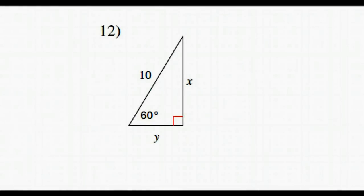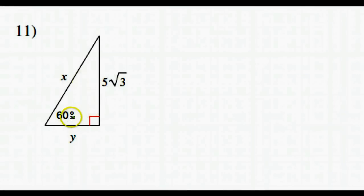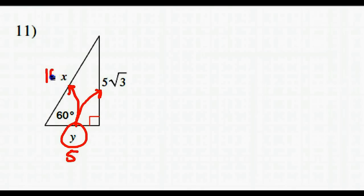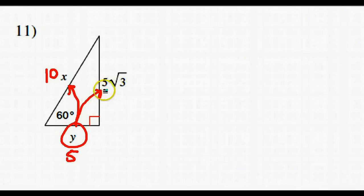Number 11. We are given the long leg, which is 5 radical 3. We know that the long leg equals the short leg times radical 3, so the short leg must have been 5. Once we see the short leg is 5, the hypotenuse is double that — so x is 10. Therefore y is 5 and x is 10. Visual learners will immediately see: if that's 5 radical 3, then the short must be 5 and the hypotenuse is 10.